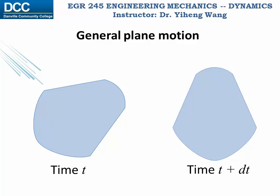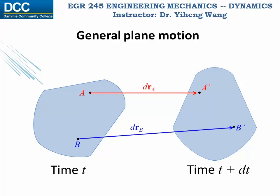To study the general plane motion, let's focus on the motion of two arbitrary particles in this rigid body: particle A and particle B, which have moved into two new locations. During motion, the displacement of particle A is vector drA, and the displacement of particle B is vector drB. The initial relative position of particle B relative to A is rB/A, and after the motion the relative position is rB/A prime.